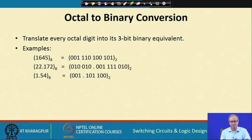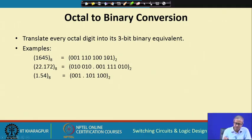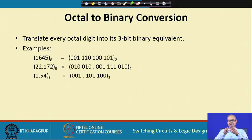Octal to binary is even simpler. Take an octal number and replace each octal digit by its 3-bit binary equivalent. For example, octal 1645: replace 1 by 001, 6 by 110, 4 by 100, 5 by 101. Similarly for fractional octal numbers. Converting between binary and octal is very trivial. For decimal to octal or octal to decimal, you follow the same rules as for binary — with the difference that you divide or multiply by 8.